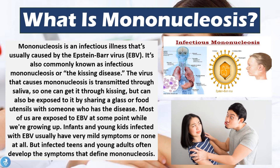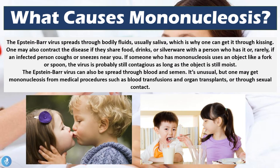The Epstein-Barr virus spreads through bodily fluids, usually saliva, which is why one can get it through kissing. One may also contract the disease if they share food, drinks, or silverware with a person who has it, or rarely if an infected person coughs or sneezes near you, since a small bit of saliva is released during that sneeze or cough. If someone who has mononucleosis uses an object like a fork or a spoon, the virus is probably still contagious as long as the object is still moist.